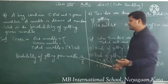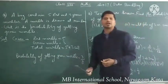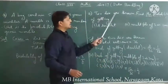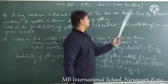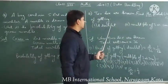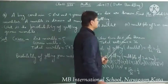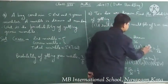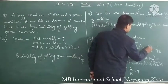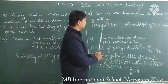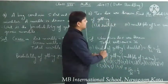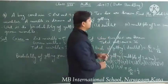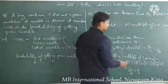Now the next question: 2 dice are thrown. Find the probability of getting a doublet, and also find the probability of getting a multiple of 3 as a sum. So you have to find 2 things here.